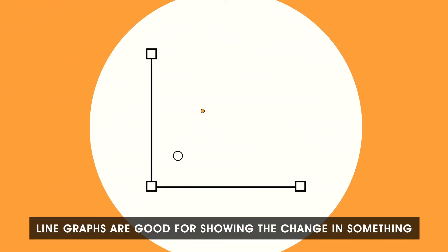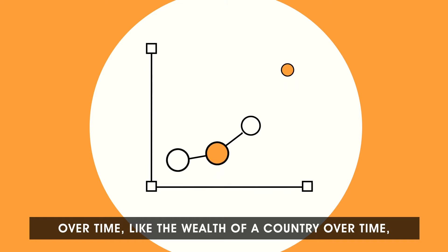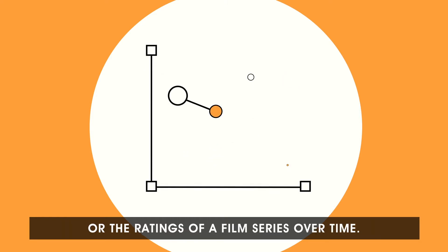Line graphs are good for showing the change in something over time, like the wealth of a country over time, or the ratings of a film series over time.